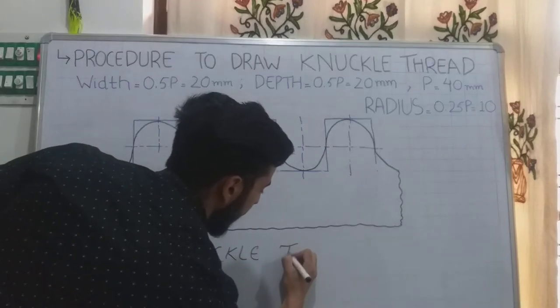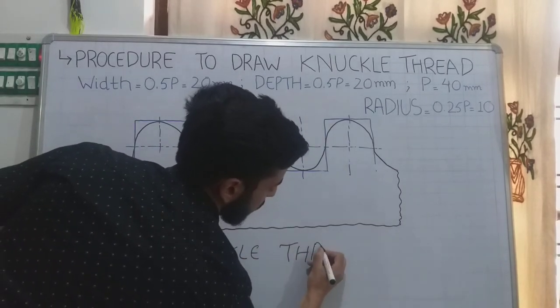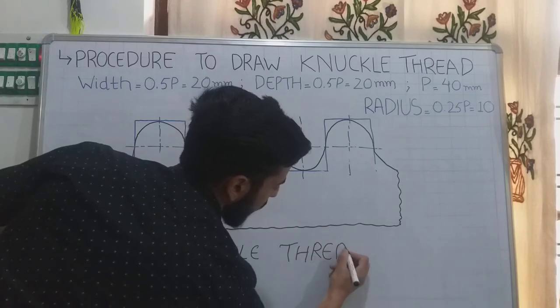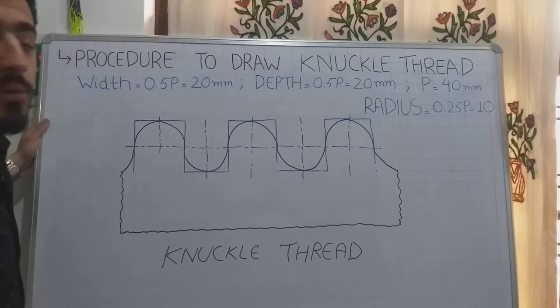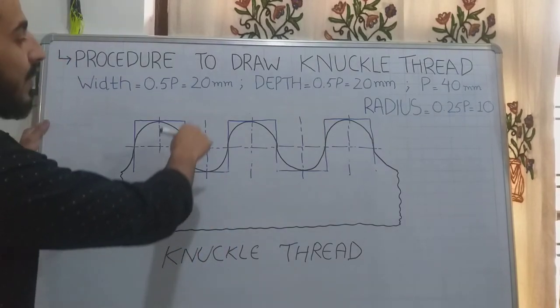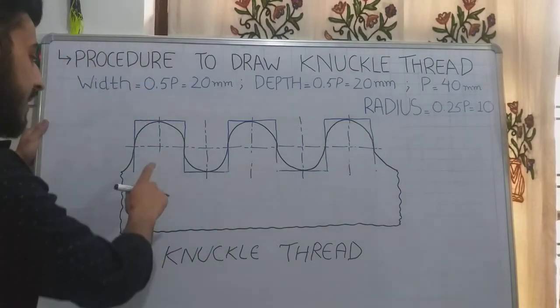This is my knuckle thread. Knuckle thread is actually the modified form of square thread. But this is not complete. We need hatching and dimensions to show. First of all, we need hatching.